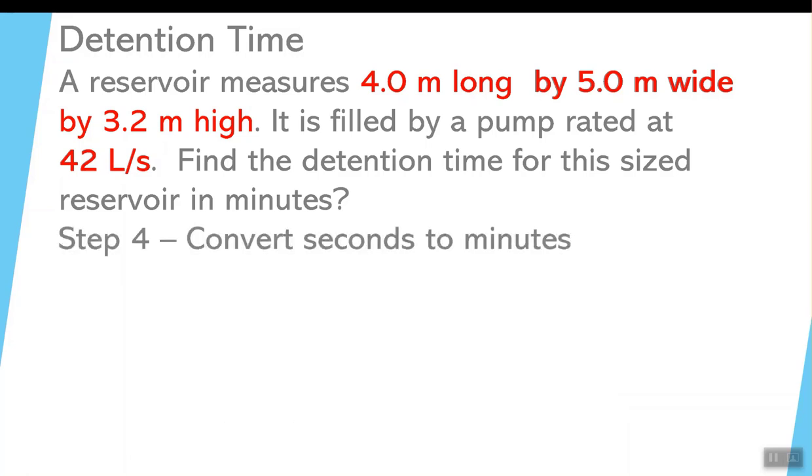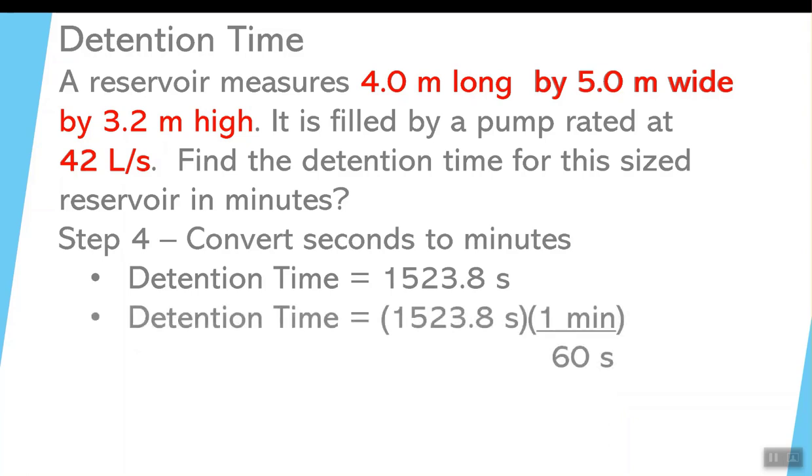When we convert seconds to minutes, we start off with our 1,523.8 seconds, and we have to do something to that. Notice we want to get rid of that seconds in 1,523.8, so you have to divide by seconds, or 1 minute per 60 seconds. Units cancel out quite nicely. Notice the detention time unit that's left is minutes. That's what we're looking for.